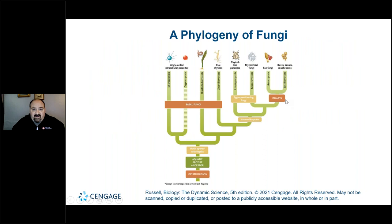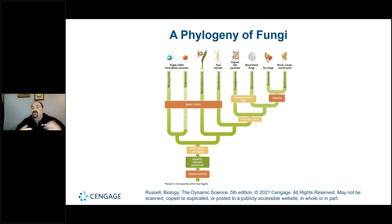Fungi diverged into diverse groups with different adaptations associated with reproduction. We're going to be looking at parasitic forms of fungi and mutualistic forms as well. When you think of a symbiotic relationship, think of a relationship where two organisms are living together and working together. The variations — parasitic, mutualistic, and commensalistic — are the types we'll look at.